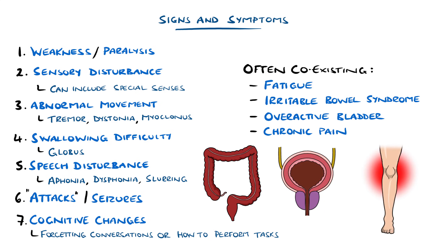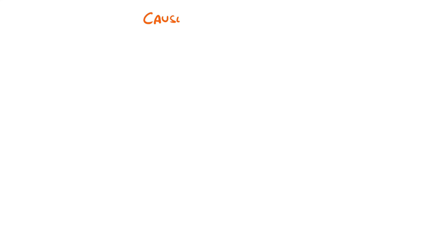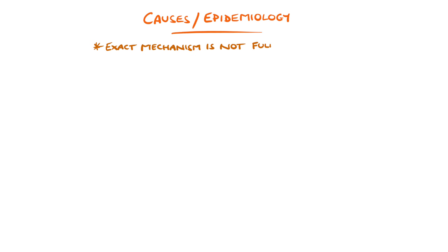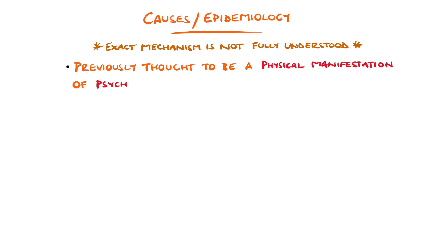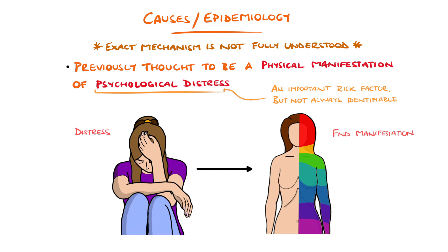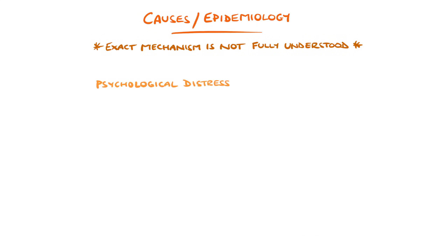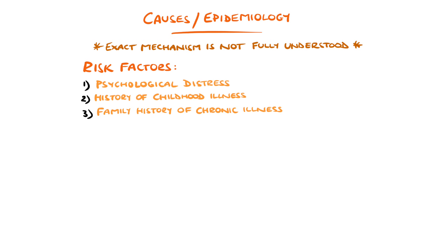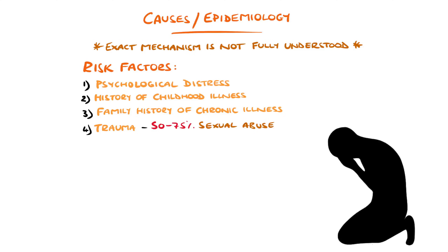It's important to recognise that functional does not mean voluntary or feigned. The exact cause and mechanism is not fully understood. Previously it was thought that physical symptoms may be manifestations of psychological distress, though now it is recognised that psychological distress is an important risk factor and may perpetuate symptoms, but it isn't always identifiable. Other risk factors include a history of childhood illness, a family history of chronic illness, and a history of trauma including sexual abuse, thought to be present in between 50 and 75% of cases.